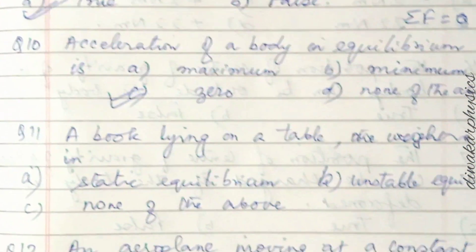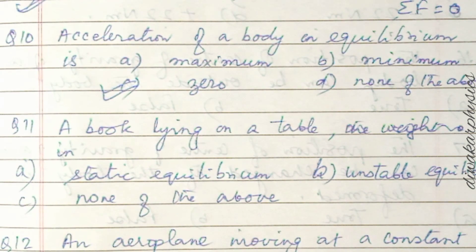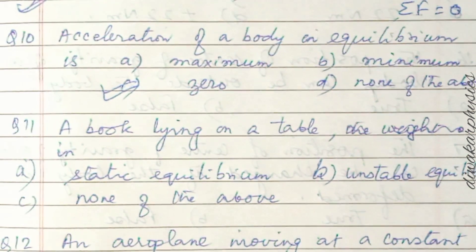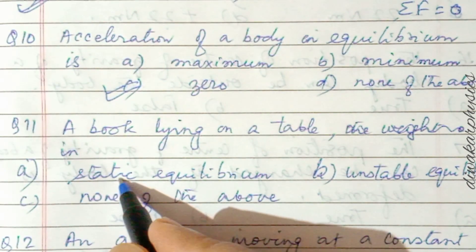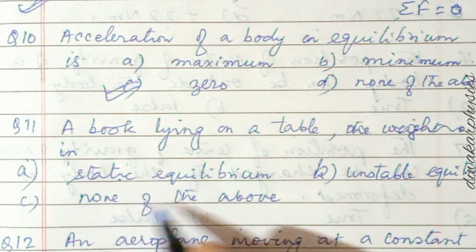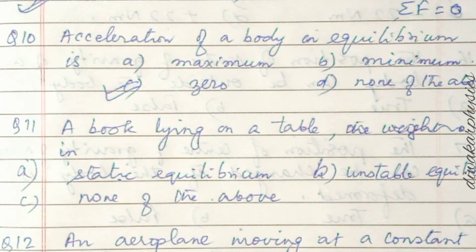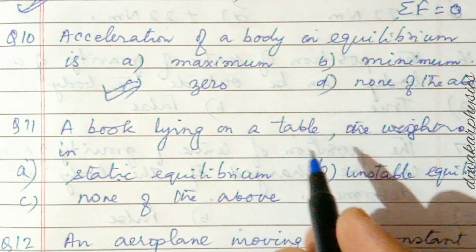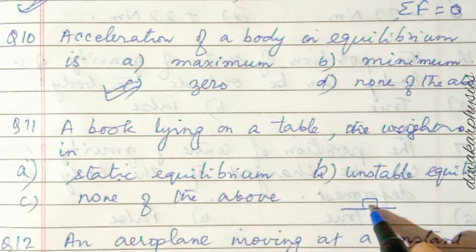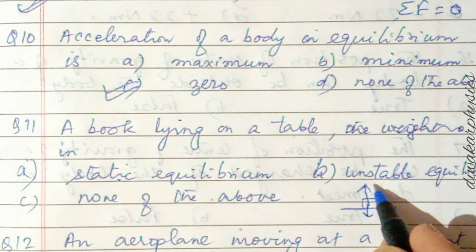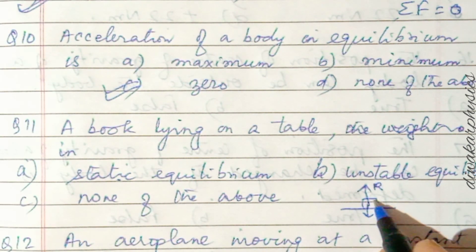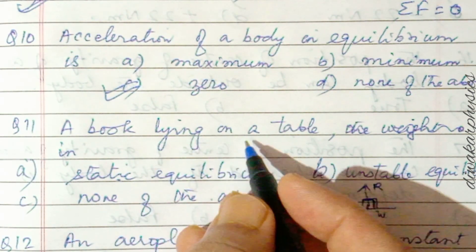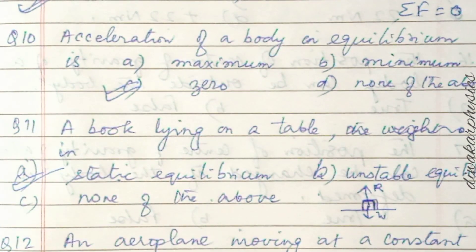Question eleven: a book lying on a table is in which equilibrium — static, unstable, or dynamic? Two forces act on the book: normal reaction and weight, but the net force is zero and the body is at rest. When net force is zero and the body is at rest, it is in static equilibrium. So the first answer is correct.